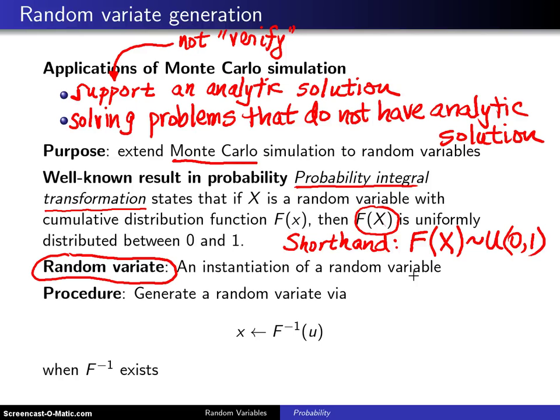The procedure for coming up with a random variate is you generate u where u has the uniform distribution between 0 and 1. Another way of saying that is you take a random number and you plug it into the inverse cumulative distribution function and out will pop a random variate x. If you want to see the geometry of what is going on here,